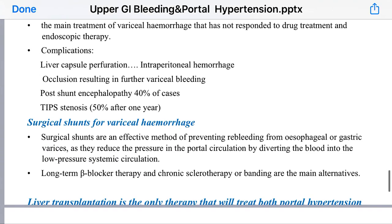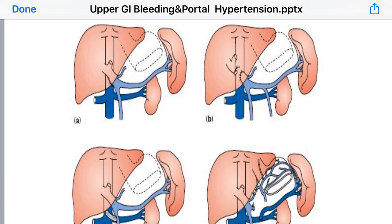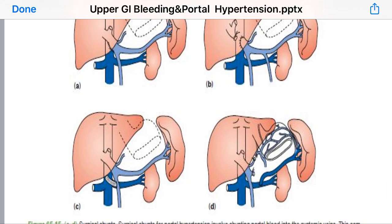Surgical shunts are an effective method of preventing re-bleeding from esophageal or gastric varices, as they reduce the pressure in the portal circulation by diverting blood into the low-pressure systemic circulation. We create surgical anastomoses to divert blood from the portal venous pressure into the systemic circulation. Different modalities include: portocaval anastomosis — either side-to-side or end-to-side portocaval; mesocaval shunt; and splenorenal surgical shunt.